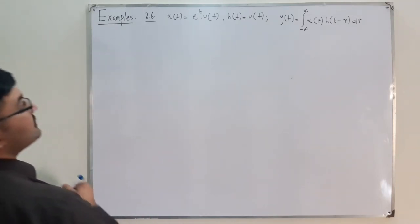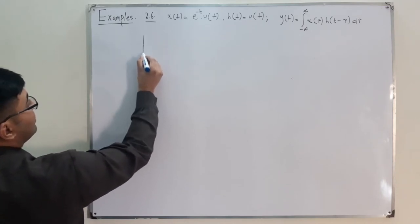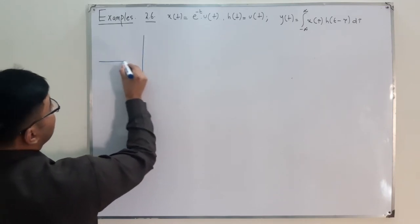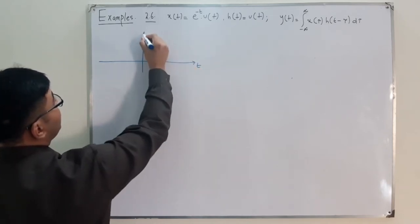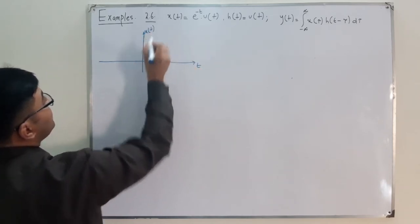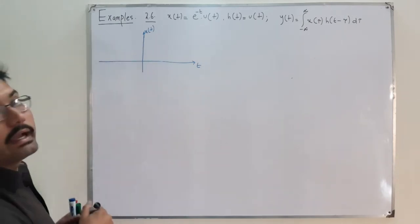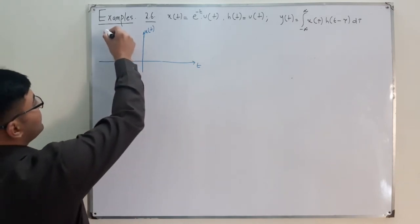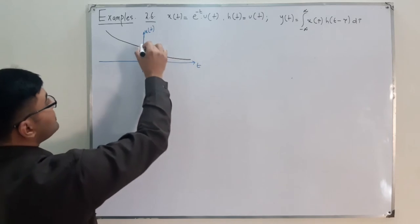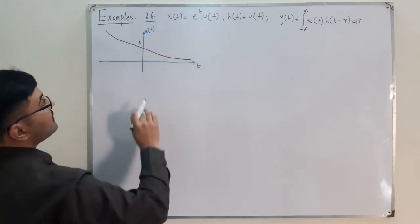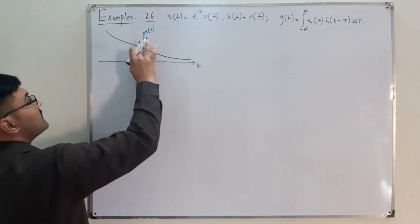Let's draw the graphs. x(t) = e^(-at) · u(t) is an exponentially decreasing function with intercept 1, and the negative portion is clipped by u(t). So x(τ) on the τ axis looks the same. The h(t) = u(t) is again the unit step equal to 1 for t ≥ 0, represented on the τ axis as h(τ).